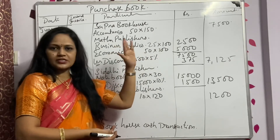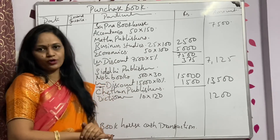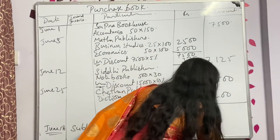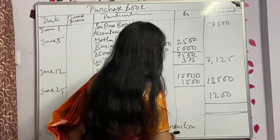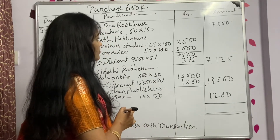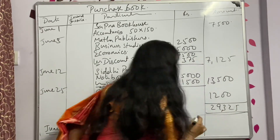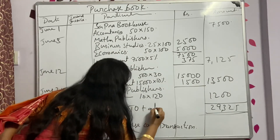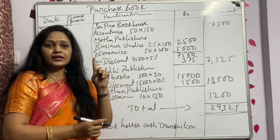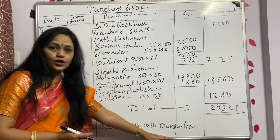Now the entries are complete. Please do the total and tell me what the total of the purchase book is. Remember: only credit transactions are entered. If any transaction is there, please write down the note.